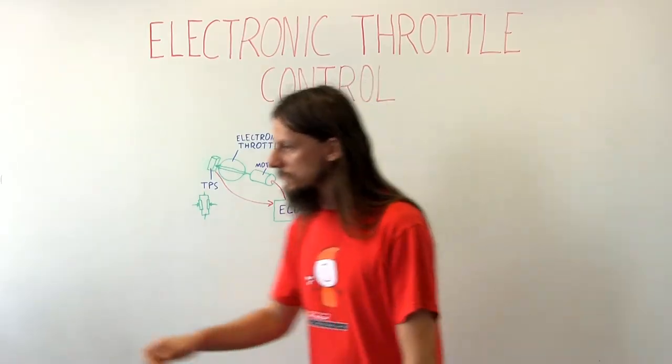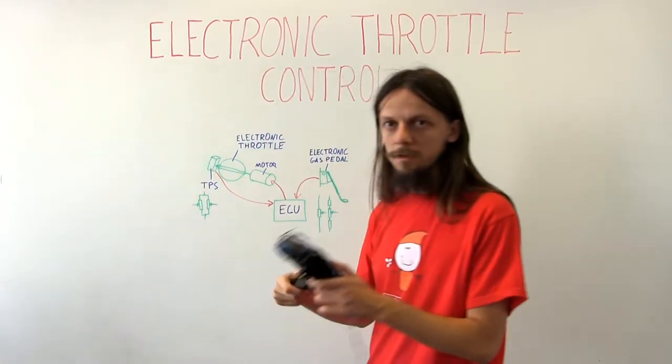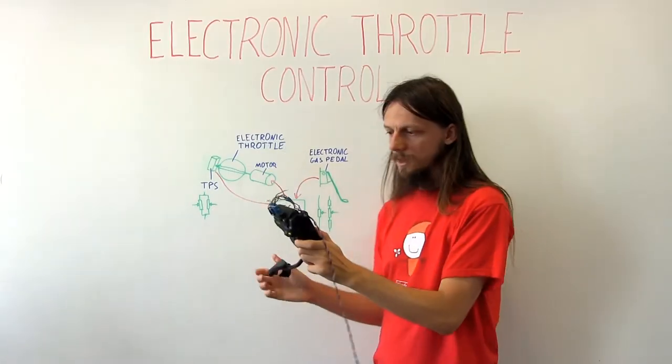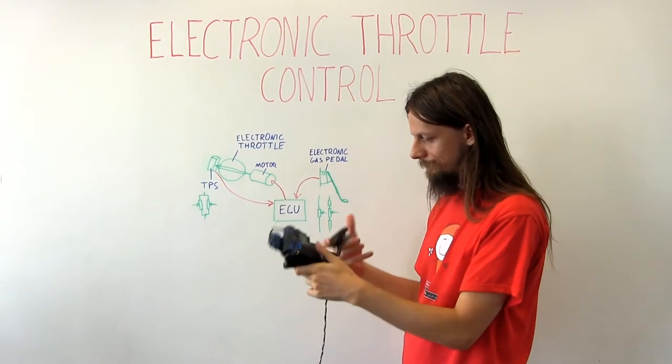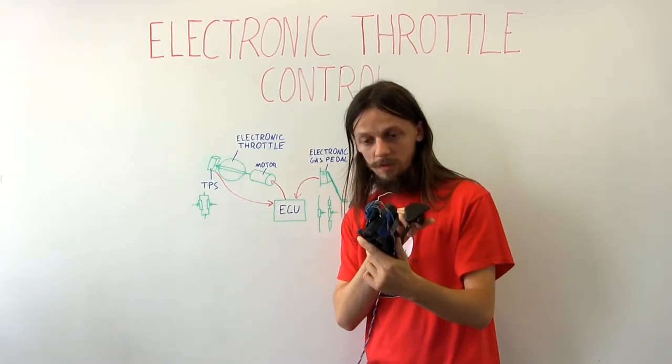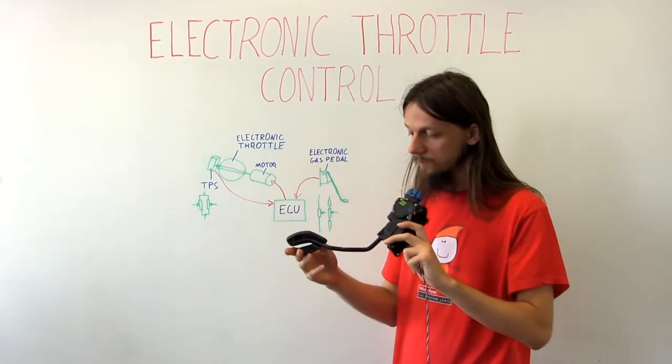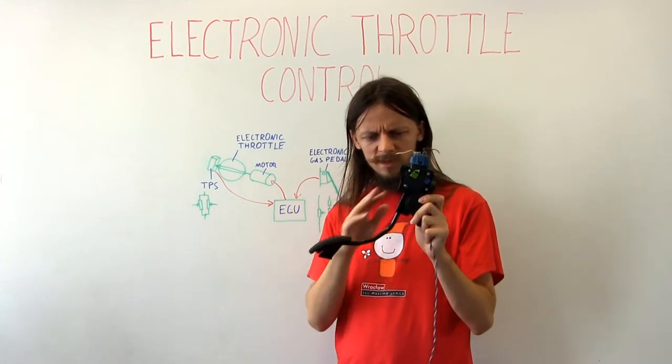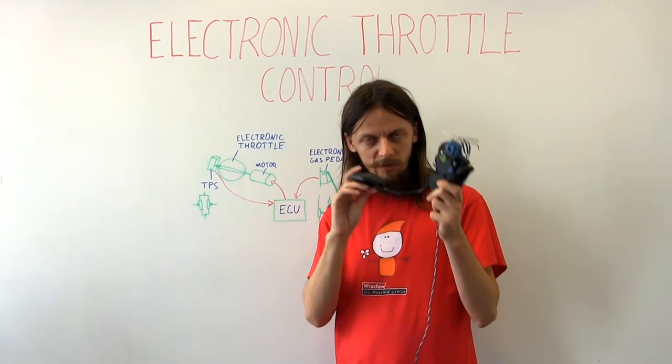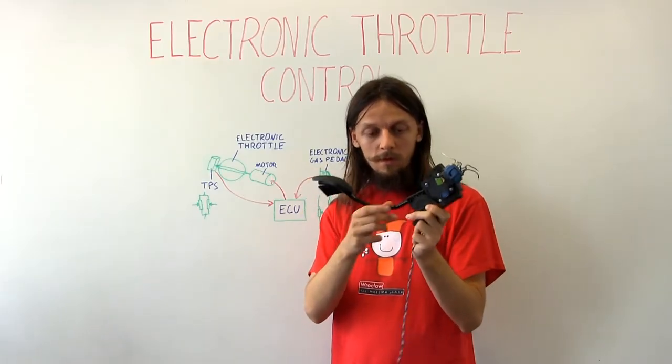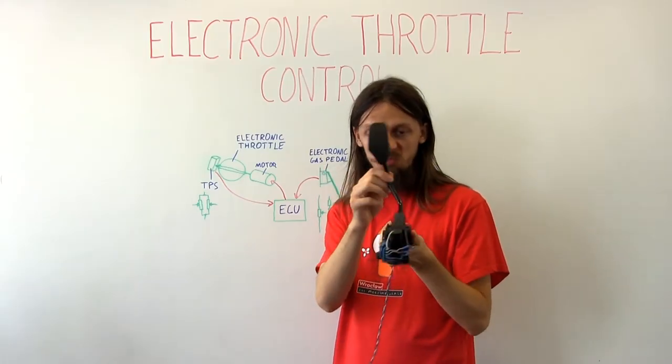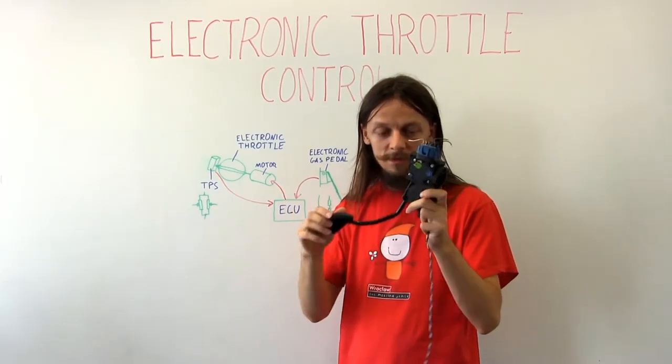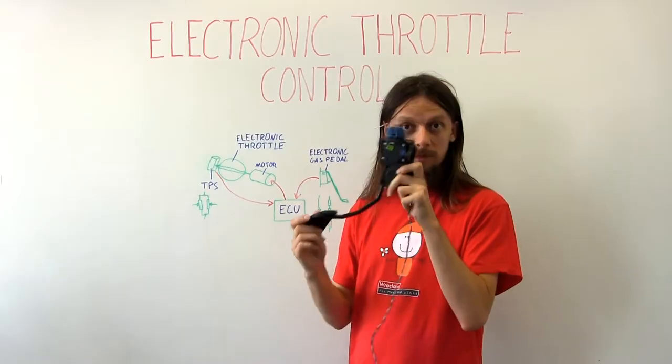So I've got one gas pedal here. It looks like that. It's produced by Bosch. This one comes from Fiat Punto, I believe. These days most of them will be fully plastic, but I bought this one because it has this arm made of metal, which makes it a bit easier to adapt. I can just cut it and weld it if I need.